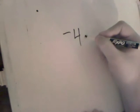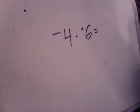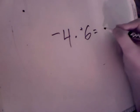Let's look at some problems. If we have negative four times positive six, the first thing that we're going to do is multiply like normal. Six times four is 24.